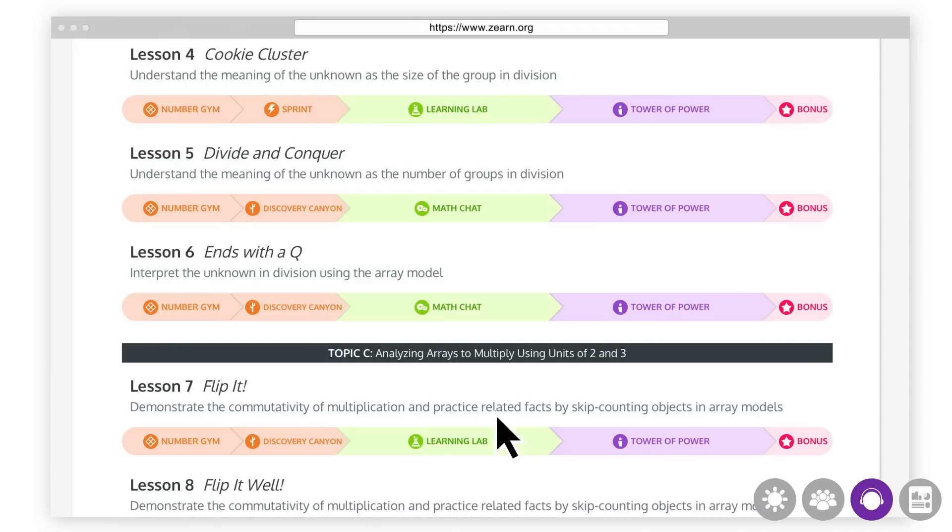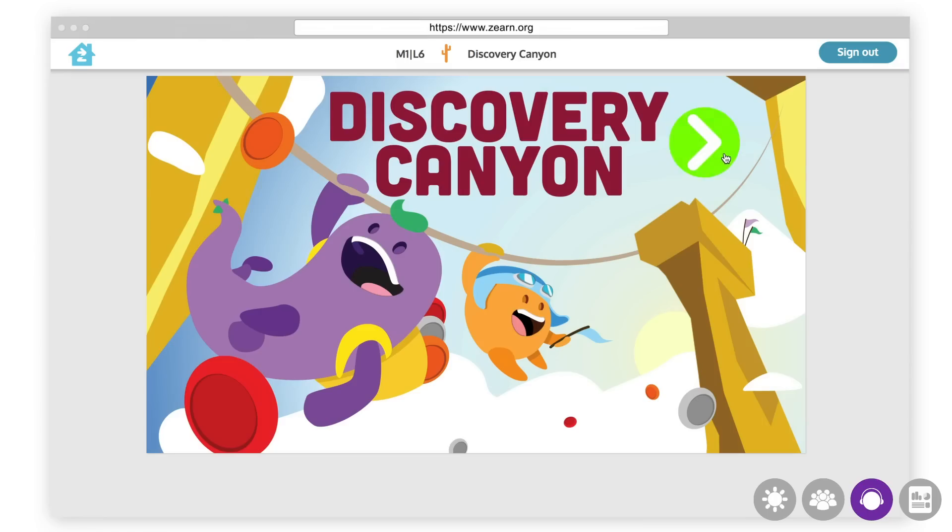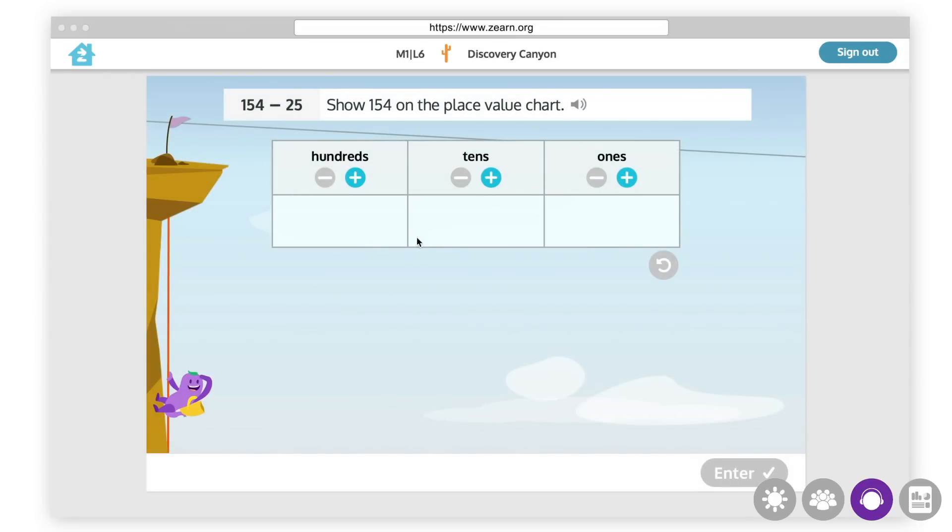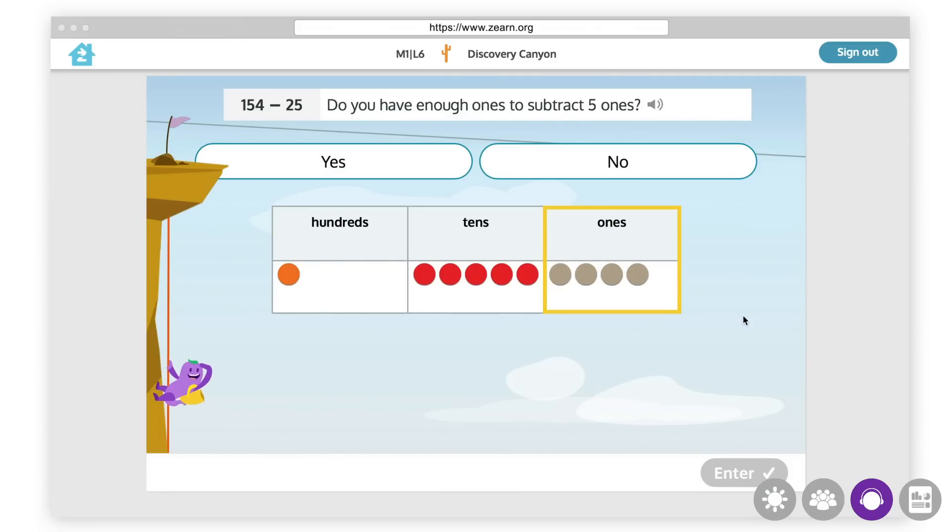Next, students do a Lesson Aligned Fluency. These activities support students' grade-level learning by reviewing previously learned concepts and preparing for upcoming content. This particular activity develops fluency with addition and subtraction of multi-digit numbers, keeping place value strategies fresh and building deep understanding of the base 10 system. The combination of daily software-based fluency work and whole group fluency work strengthens students' understanding.